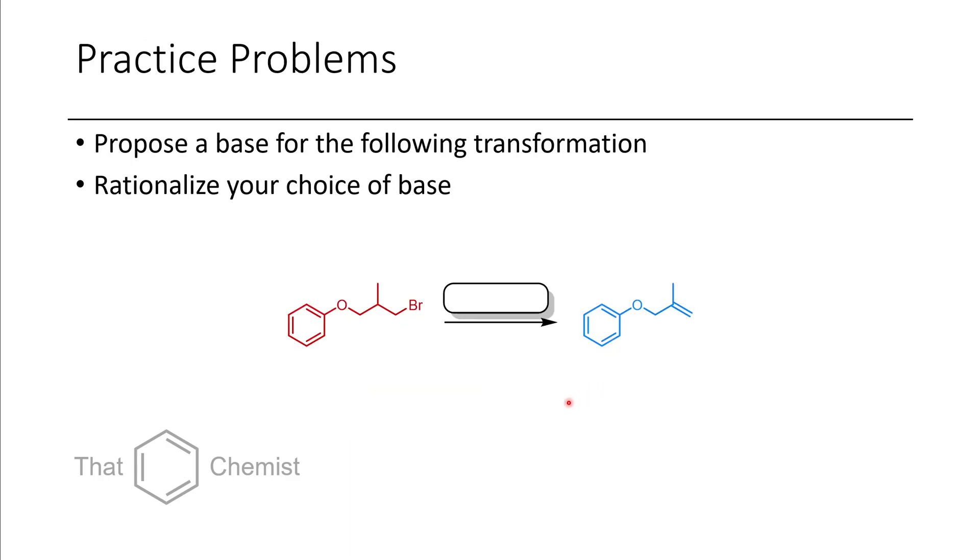For practice problems for today's lecture, I'm going to give you two. The first one is rationalize a choice of a certain base for this transformation. Additionally, for the next problem, you have to choose a base that would give you this trisubstituted alkene versus the disubstituted alkene and just explain why that is. And maybe if you have any comments on why you think that would be the case, it would be worth writing that out and thinking about it.